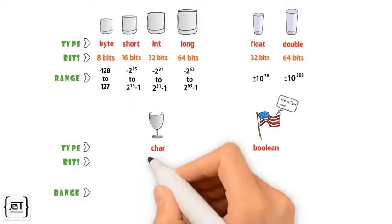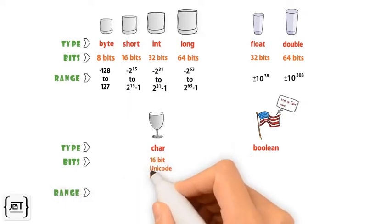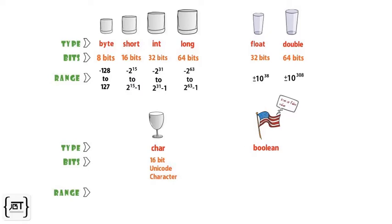A char holds a single 16-bit unicode character. It has a minimum value of 0 and a maximum value of 65535.